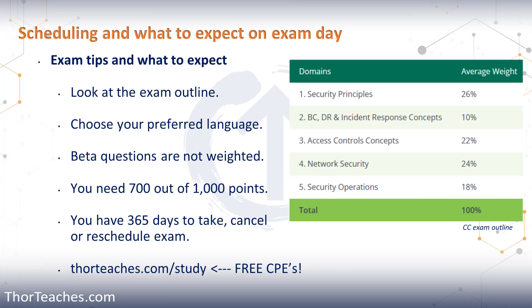Once you have scheduled your exam, you have 365 days to either take or reschedule it. If you need to cancel or reschedule, you can do it online at least 48 hours before the exam, or by phone at least 24 hours before. There will be a rescheduling fee of $50 or a cancellation fee of $100. If within that one year you don't cancel and don't sit for the exam, you lose your exam fee.